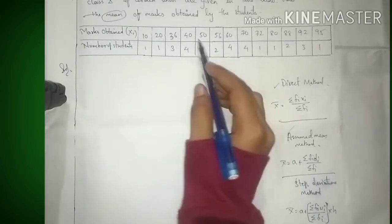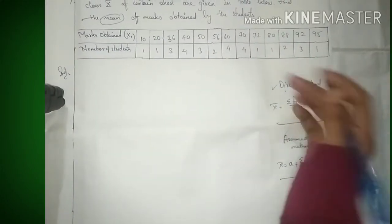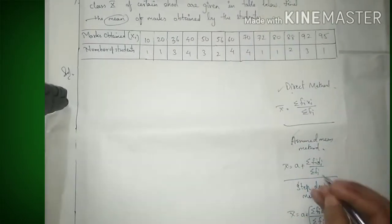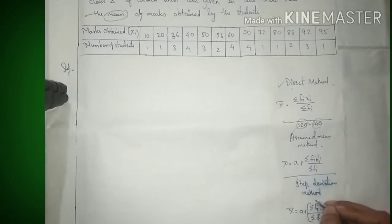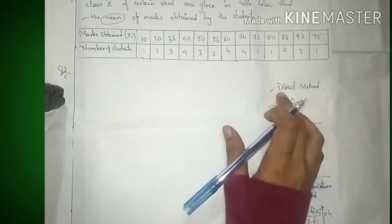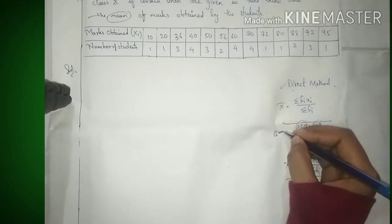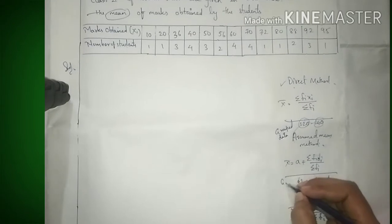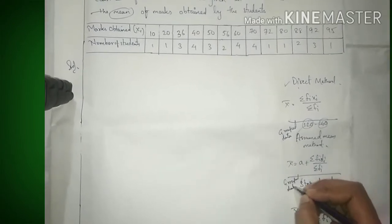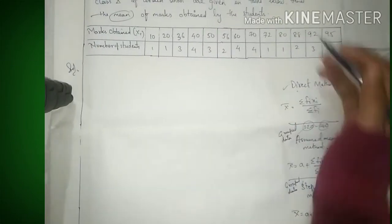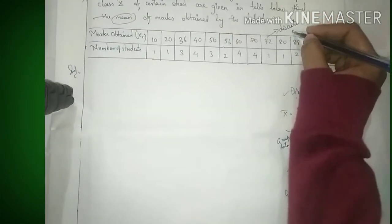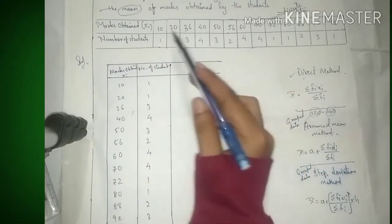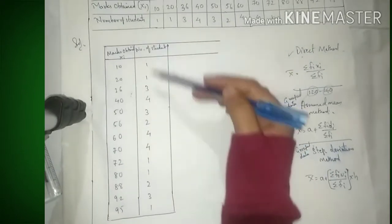Last वाले में a और h का difference है। Discrete data के लिए Direct Method use करना पड़ेगा। अगर values grouped data में हैं और बड़े हैं, तो Assumed Mean Method और Step Deviation Method use कर सकते हैं। यह जो question है, यह discrete data है क्योंकि इसमें grouped data में values नहीं हैं। First column में marks obtained और second column में number of students copied as-is from the question।